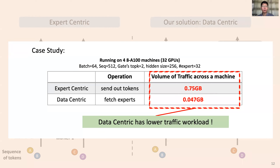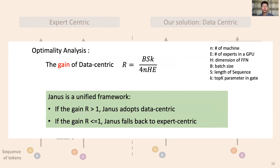Let's take an example to compare. When training MoE models in a 32-GPU cluster, expert-centric will generate 0.75 GB traffic across a machine for each layer, while data-centric has lower traffic workloads and can be more efficient. We also analyze the opportunity of data-centric and derive a gain formula. JANUS is a unified framework: when the gain is greater than 1, it adopts data-centric; otherwise, it falls back to expert-centric.